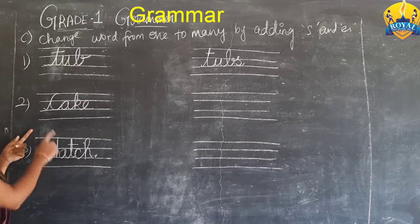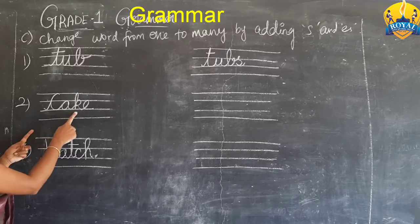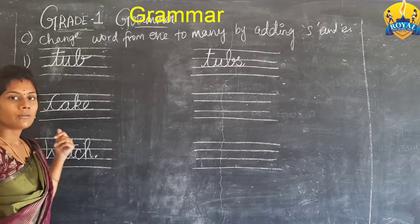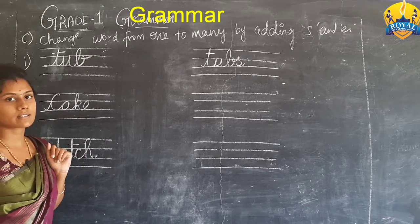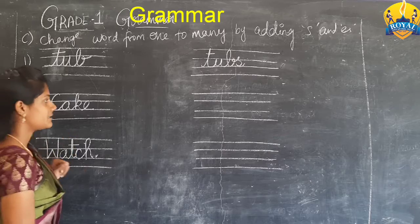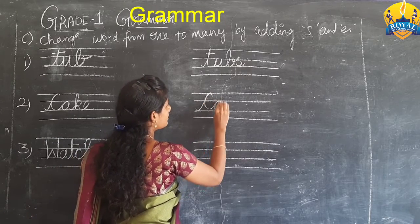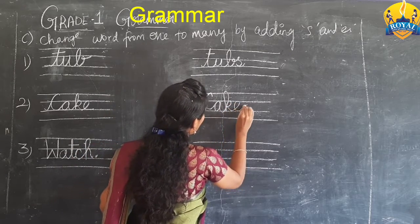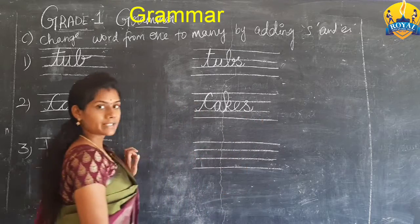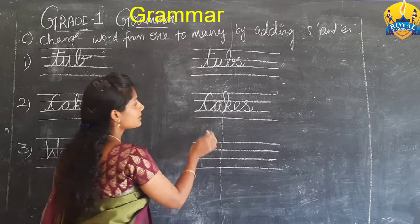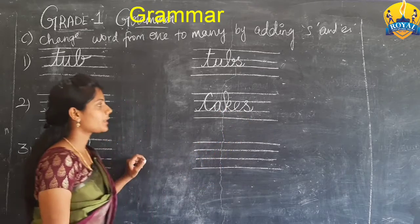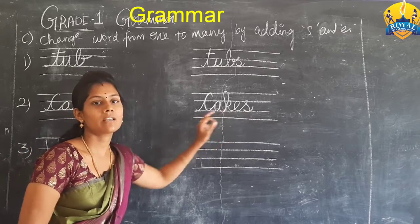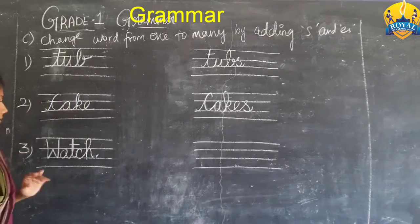The next word is 'cake' — C-A-K-E. Here, we add S to make it plural: C-A-K-E-S. Cakes. By adding S, this word changes from singular to plural form.